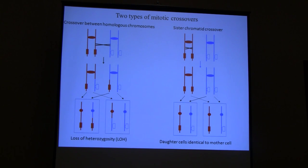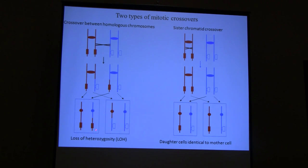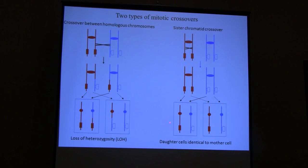There are two types of crossovers in mitotic cells. One is an exchange between homologues — if the two homologues differ by SNPs distributed along them, one effect of a crossover can be loss of heterozygosity for markers distal to the exchange point. After the crossover, one daughter cell becomes homozygous for the red sequence and the other for the blue. On the other hand, a crossover between sister chromatids does not cause loss of heterozygosity, since the sisters carry identical genetic information.